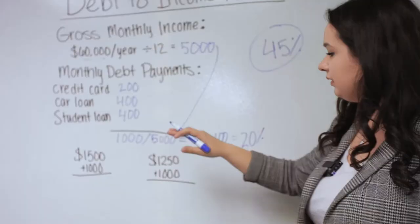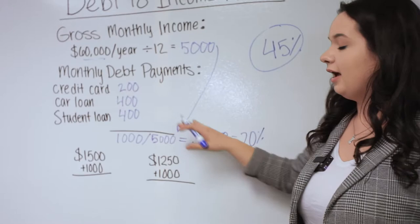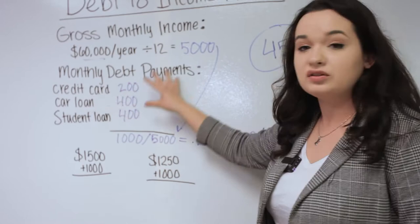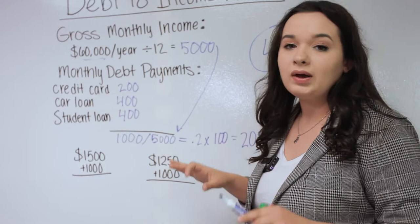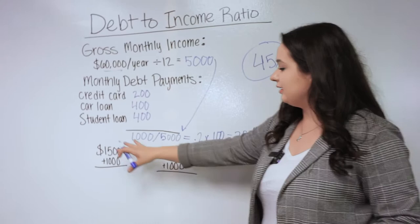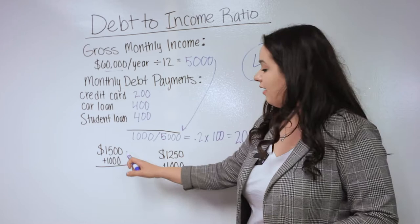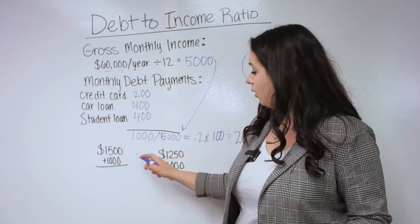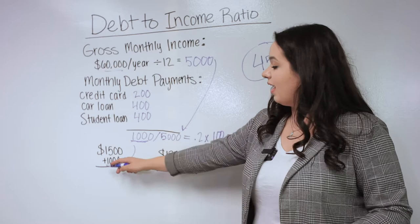Our goal with a house payment is to stay at 45% or lower. Let's factor in how having a house payment with these current monthly debt payments would affect this percentage. If I'm thinking about having a house payment of $1,500 a month, and I already have $1,000 in existing debt, that would give me monthly debt payments of $2,500.